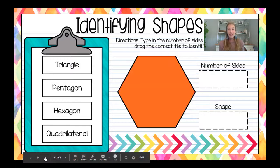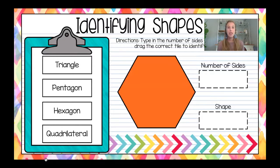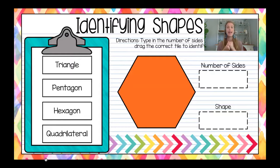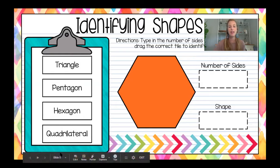Go ahead and count those sides and name that shape. Let's count together: one, two, three, four, five, six — six sides. So it's not a triangle, it's not a pentagon. This one is a hexagon. Hex means six, so this is a hexagon.